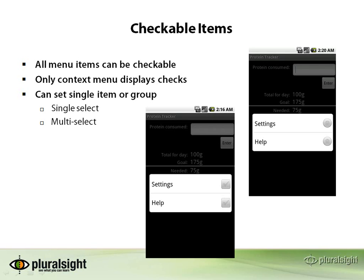Let's look at checkable items. In Android, menu items can be made checkable, and this doesn't necessarily mean they're going to have a check box. What this does is allow you to create essentially a single select or a multi select for a group of menu items, or a selection for a single menu item. If you have your menu items in a group, you can choose whether one of them is selected — which gives you a radio button selection — or a multi select which lets you have more than one selected. For a single menu item, you can choose whether that item by itself is checkable or not.